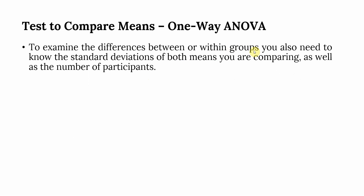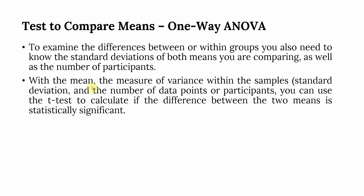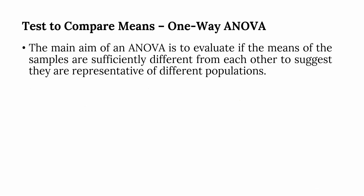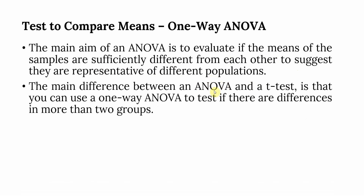To examine differences between or within groups, you also need to know the standard deviation of both means you are comparing, as well as the number of participants. With the mean, the measure of variance within the samples, standard deviation, and number of data points, you can use the t-test to calculate if the difference between two means is statistically significant. The main aim of One Way ANOVA is to evaluate if the means of the samples are sufficiently different to suggest they represent different populations. The key difference from a t-test is that ANOVA can test differences in more than two groups.